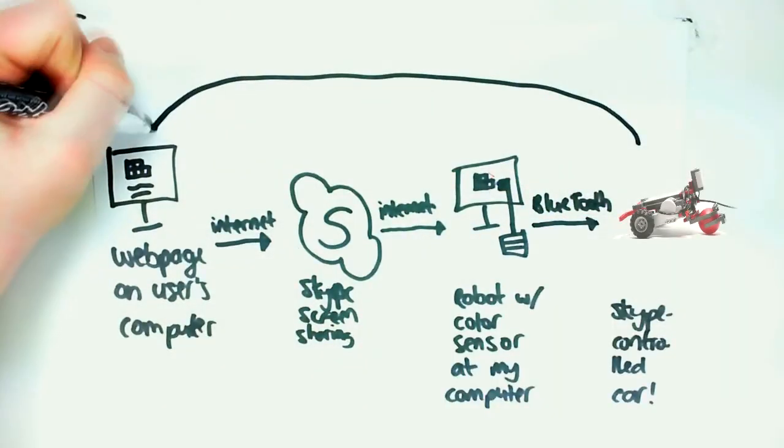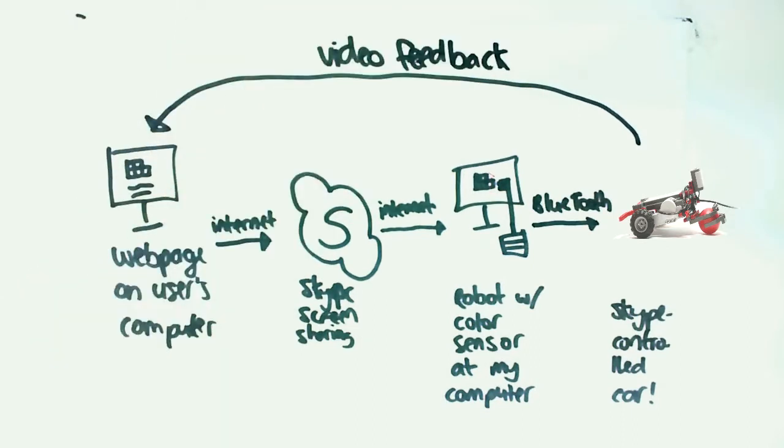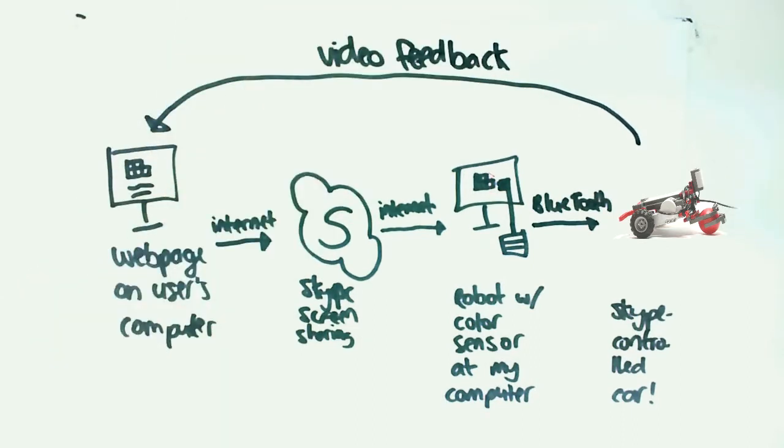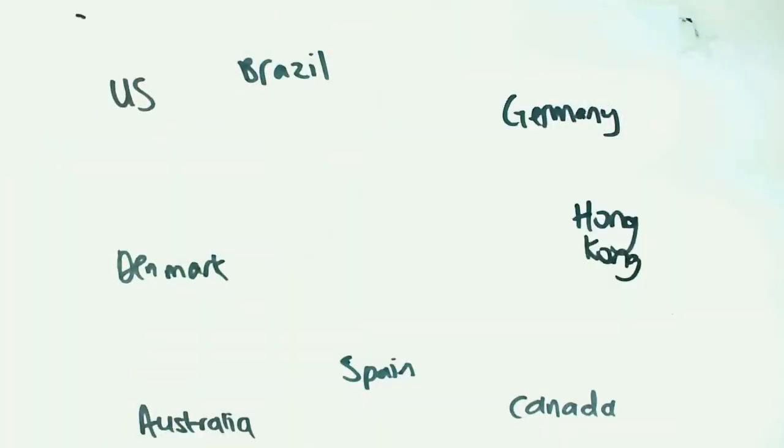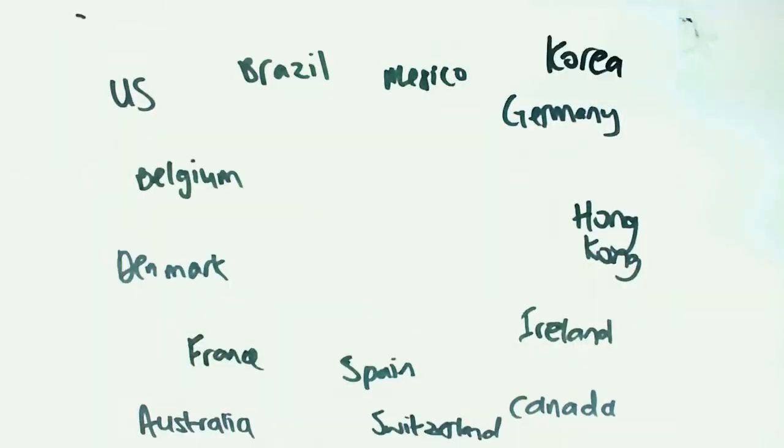Over Bluetooth, the command paired with the last received color would then be sent to the car, making users able to drive it almost instantly. It worked really well, and hundreds of people from over 20 countries used it in the two weeks I had it up and running.